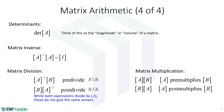Matrix multiplication: similarly, we can pre-multiply B by A, or we can post-multiply B by A. In both cases it's A times B, but the order gives different answers. A times B does not necessarily equal B times A.